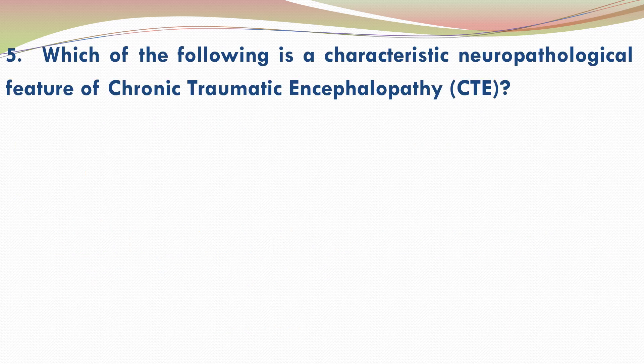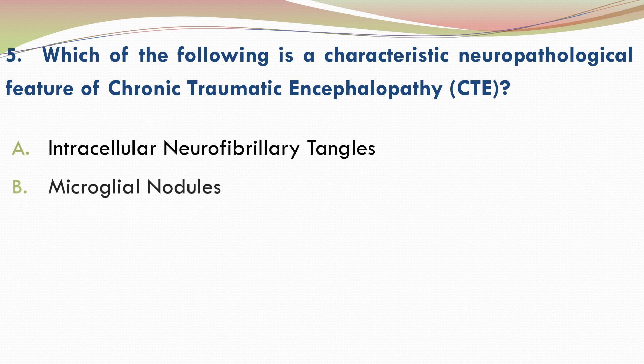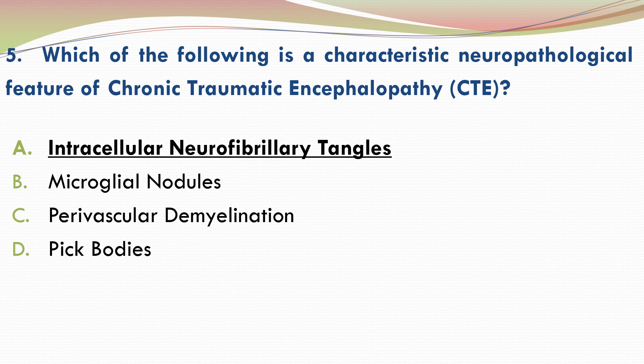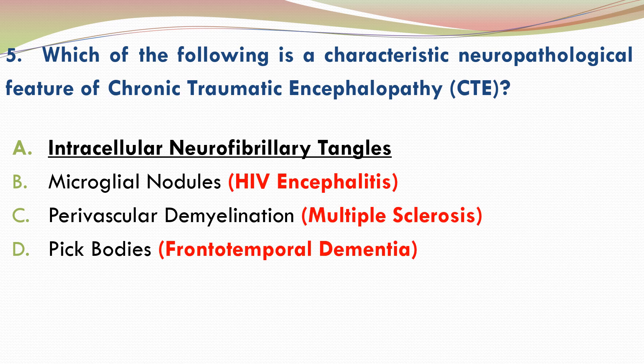The final question. Which of the following is a characteristic neuropathological feature of chronic traumatic encephalopathy? Please go through the options and select your answer. The correct answer is A — intracellular neurofibrillary tangles. Microglial nodules are a feature of HIV encephalitis. Perivascular demyelination occurs in multiple sclerosis. Pick bodies are a characteristic of frontotemporal dementia.